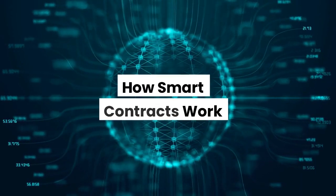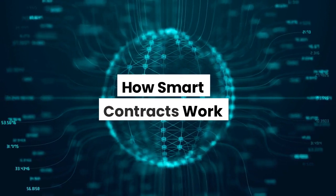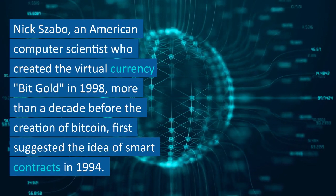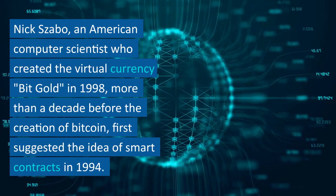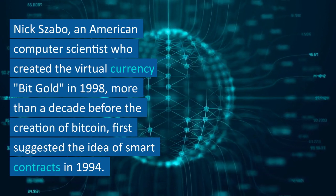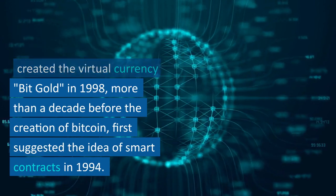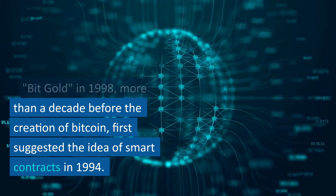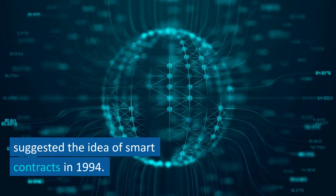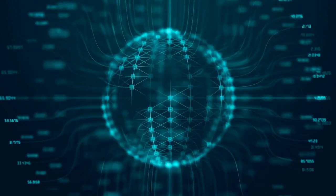How smart contracts work? Nick Szabo, an American computer scientist who created the virtual currency BitGold in 1998 — more than a decade before the creation of Bitcoin — first suggested the idea of smart contracts in 1994.